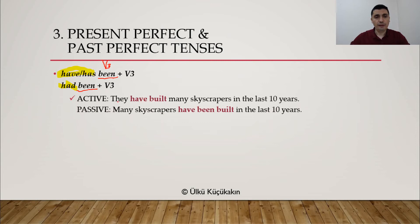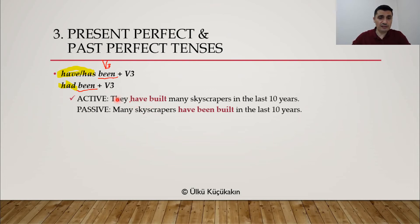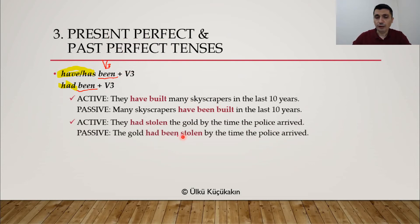Let's give some examples. 'They have built many skyscrapers in the last 10 years' — who has built them? We don't know. They is not important. Passive: 'Many skyscrapers have been built.' HAVE because of perfect tense, BEEN because of perfect tense, and BUILT because it's verb 3 and this is passive. Another example: 'They had stolen the gold by the time the police arrived.' Passive: 'The gold had been stolen by the time the police arrived.'